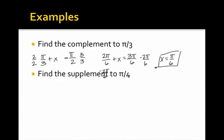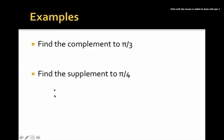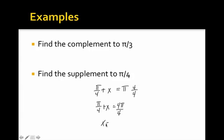Now what about the supplement to pi over 4? Let me go ahead and clear this off here. So we're going to do the same thing, but now we have to deal with pi. So we want pi over 4 plus our supplementary angle to equal pi, because pi is the equivalent to 180 degrees. So we're going to do the same exact thing and get our common denominator, which is 4. So we need to multiply pi by 4 over 4. So we get pi over 4 plus x equals 4 pi over 4. Subtract pi over 4 from both sides and we see that x equals 3 pi over 4. And that would be the supplement to pi over 4.